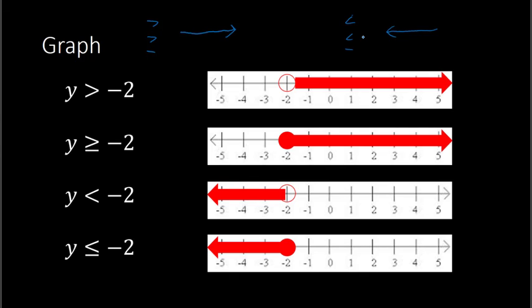That is how we know the direction. As far as open circle versus closed circle: if it's greater than or less than — no equal sign — that would be an open circle. If it has an equal sign, greater than or equal to or less than or equal to, that would be a closed circle. So that's how you determine direction and open versus closed circle.